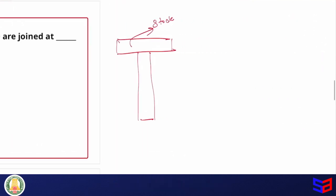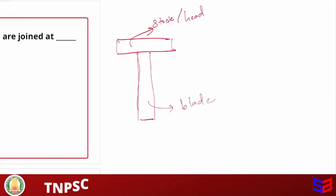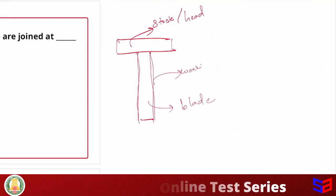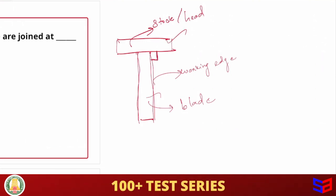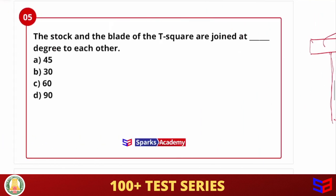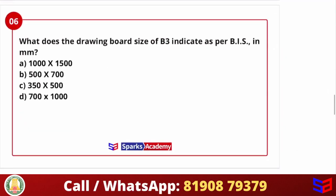The stock is also called the head in some questions. The blade part has a working edge on one side. The two portions are joined at a perfectly perpendicular direction, so the answer is 90 degrees.